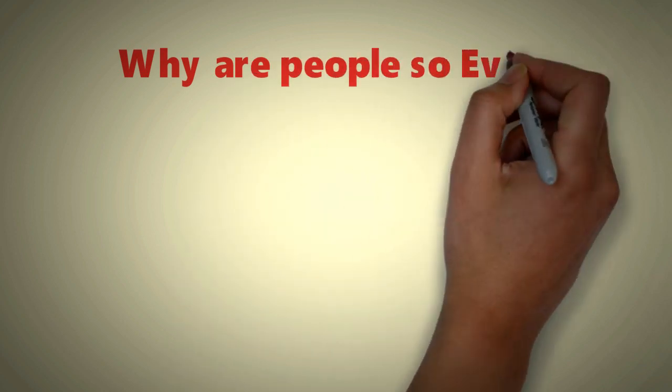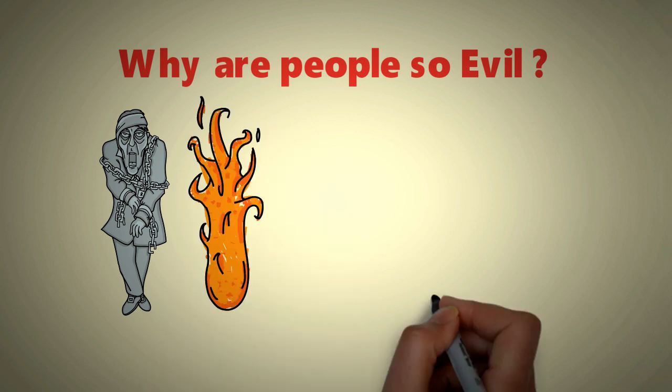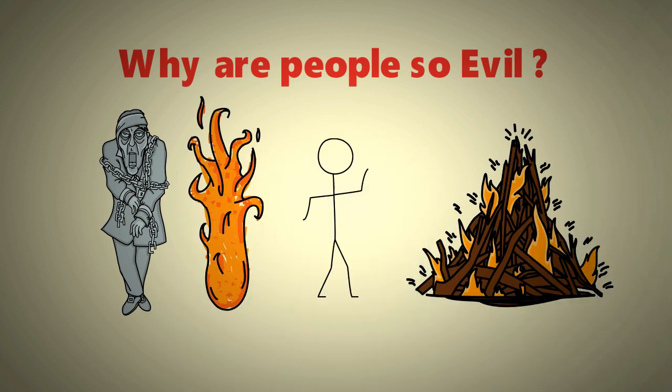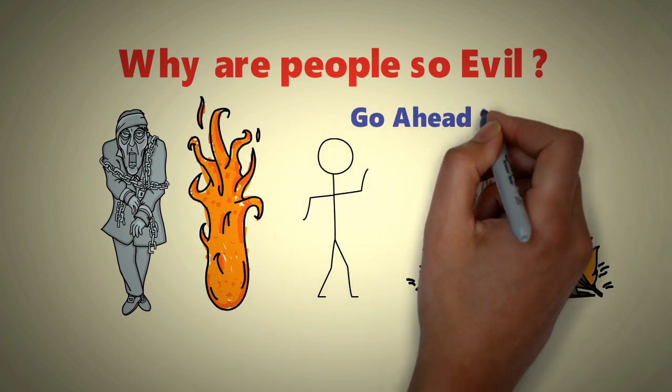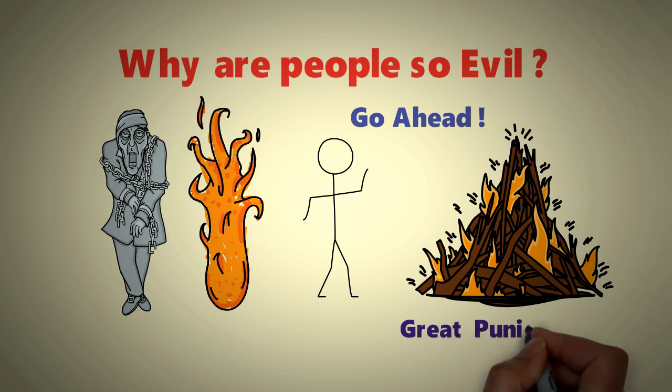Why are people so evil? Because Allah's punishment to them is He let them have it. You want to go this way? Go ahead. وَلَهُمْ عَذَابٌ عَظِيمٌ They have great punishment standing before them.